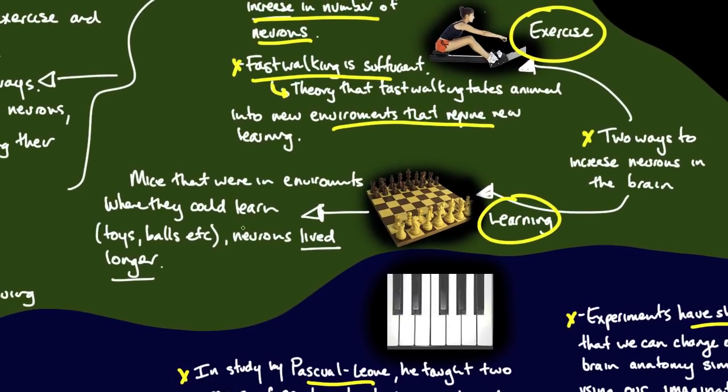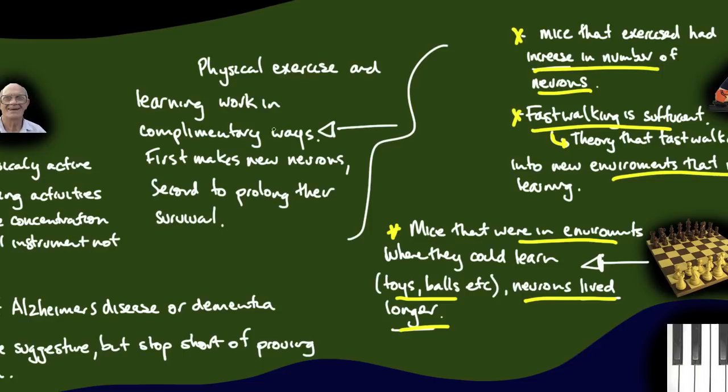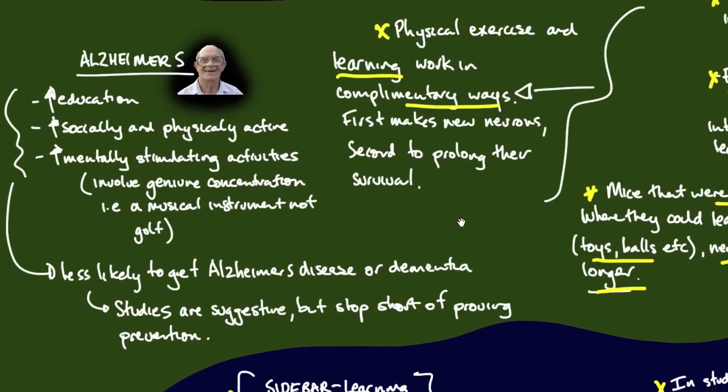The other way is through learning. They found in studies on mice that were in environments where they could learn, using toys, balls, other stimuli, neurons actually lived longer. Physical exercise and learning work in complementary ways. The first makes new neurons and the second prolongs their survival. So exercise and learning combined can lead to more neurons in the brain.